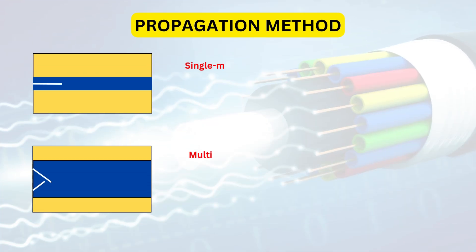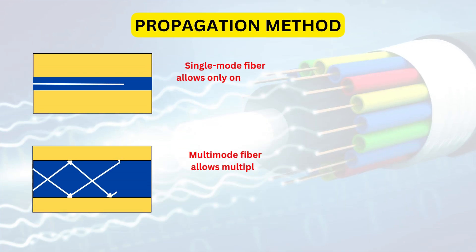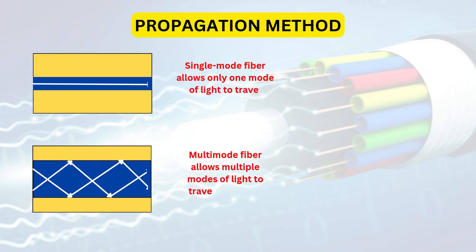Single-mode fiber allows only one mode of light to travel through it at a time. Multi-mode fiber allows multiple modes of light to travel through it simultaneously.